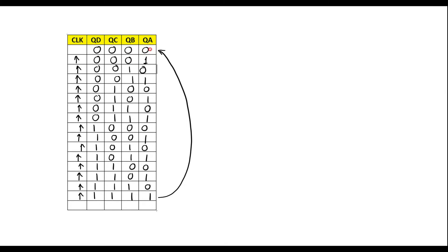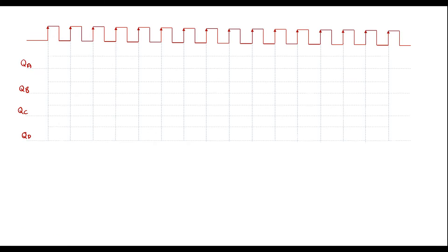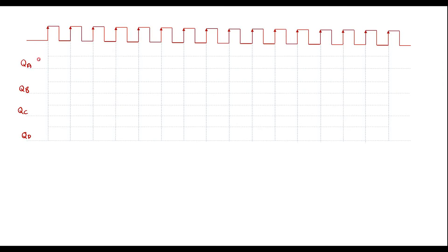We can observe that the output QA toggles at every clock pulse. Let me draw the waveform. We have outputs QD, QC, QB, and QA. At the beginning all flip-flops are in reset state, so QA, QB, QC, and QD are all 0. QA will toggle at every positive edge of the clock: 0, 1, 0, 1, 0, 1 — toggling at every clock pulse. At the first positive edge it goes high, then low at the next positive edge, and so on.